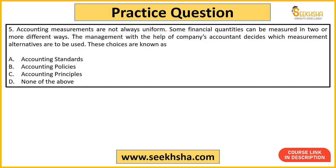Now fifth and final question guys. Accounting measurements are not always uniform. Some financial quantities can be measured in two or more different ways — ki aap kuch particular financial quantities ko do ya do se zyada different ways mein aap measure kar sakte ho. The management with the help of the company's accountant decides which measurement alternatives are to be used. These choices are known as — ultimately financial quantities hain, inhe alag-alag tariqon se aap measure kar sakte ho, different ways mein kar sakte ho.